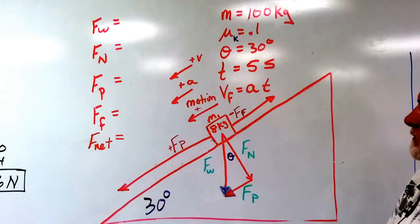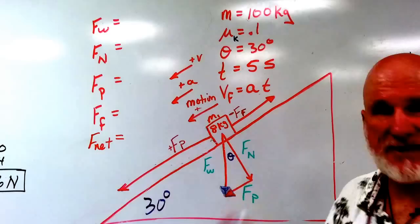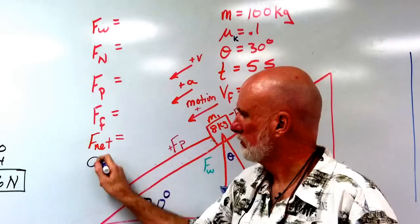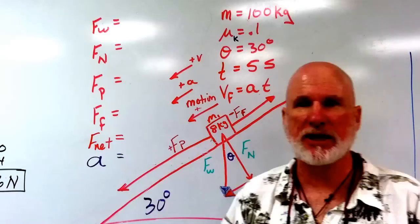He's going down for five seconds. How fast is he going to be going after five seconds? Well, I have to come up with the acceleration. To come up with the acceleration, I know the acceleration is a quotient of F net over mass.